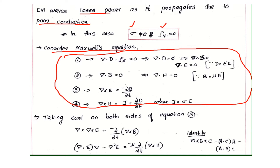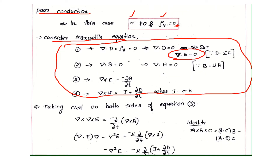First case: del·D equals rho_v, and since rho_v is 0, therefore del·D equals 0. So we have del·D equals 0, del·H equals 0, and del cross E equals minus partial B by partial t, where J equals sigma E.